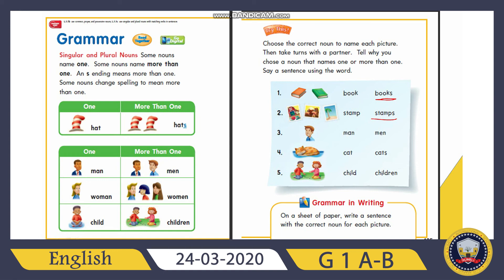Number three: 'man' or 'men'? The correct answer is man — because we are talking about one man. Number four: 'cat' or 'cats'? Cat. And number five: 'child' or 'children'? Very good!